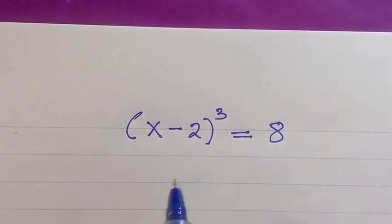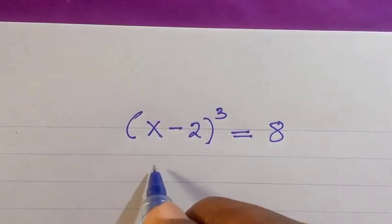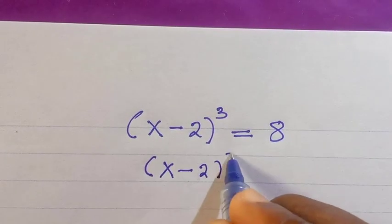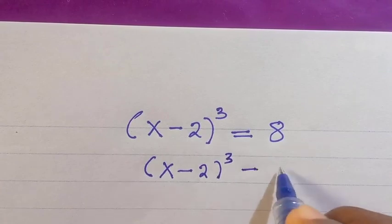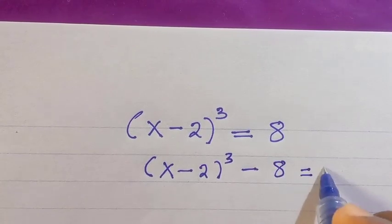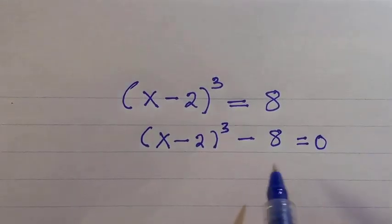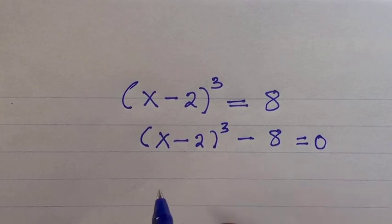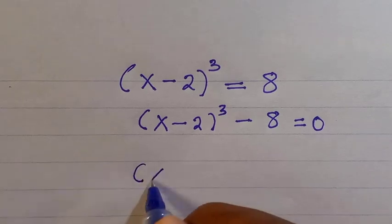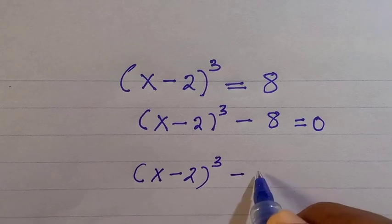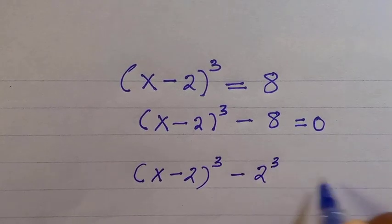To start, we transfer the right-hand side to the left, giving us x minus 2 to the power of 3 minus 8 equals 0. We then write 8 in exponent form as 2 to the power of 3, so we have x minus 2 to the power of 3 minus 2 to the power of 3 equals 0.